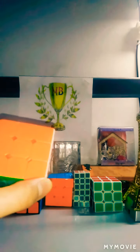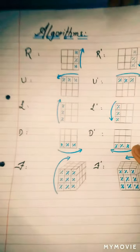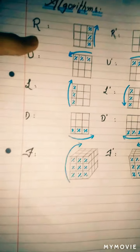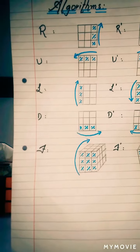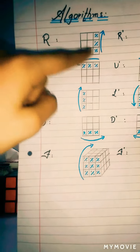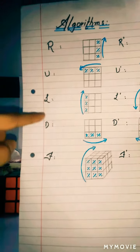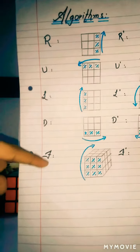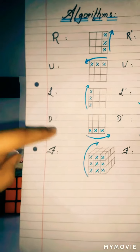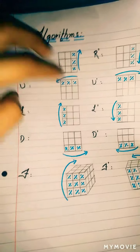First I will show you how to understand the algorithm notation. R means right, U means up, L means left, D means down, and F means front. Prime moves are always the opposite direction.